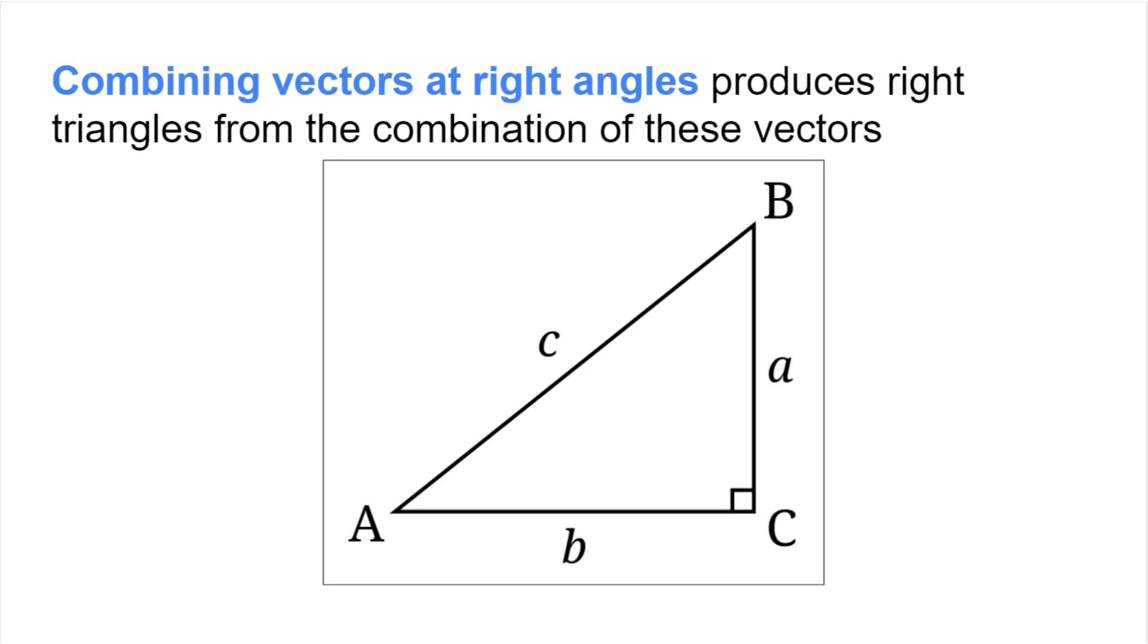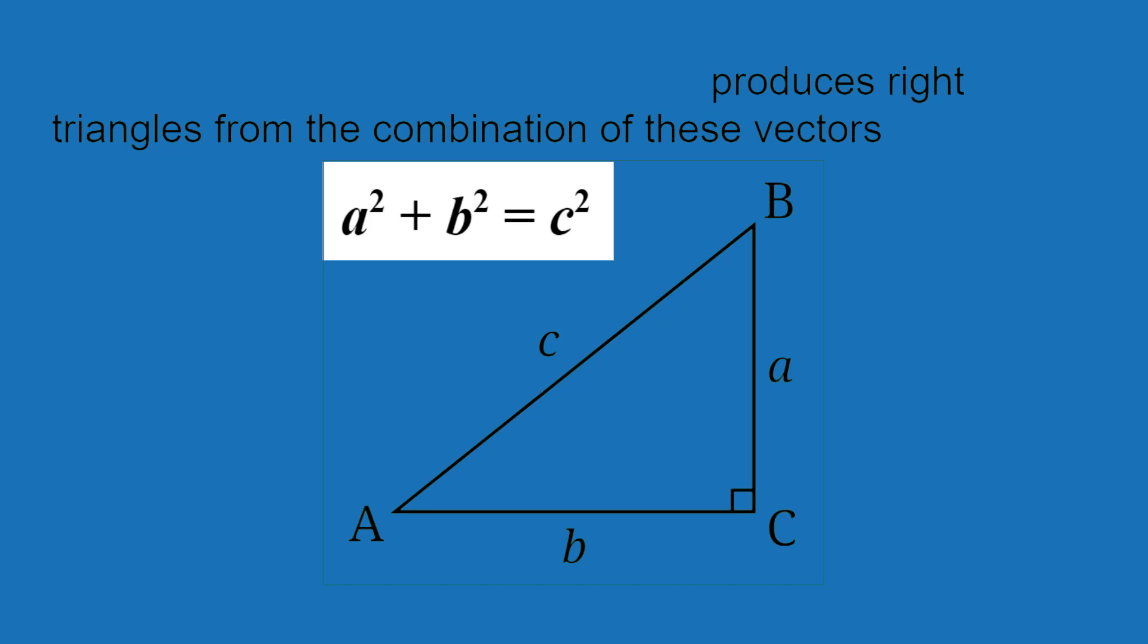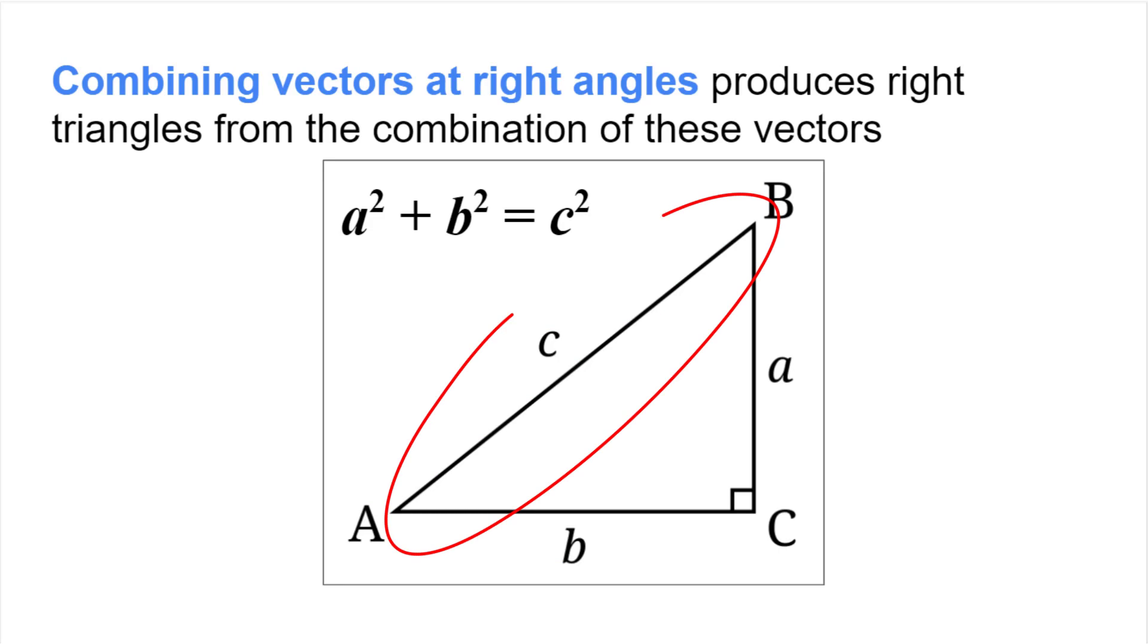The last significant part about vectors is being familiar with right triangles and the Pythagorean theorem. Because we can combine vectors to get resultant vectors, when vectors are combined at right angles we can produce right triangles. The importance of this feature is that with the Pythagorean theorem, which states that the square of the hypotenuse is equal to the sum of the squares of the two sides, we can solve for the length of the resultant vector. This can give physicists the ability to predict the outcomes of events given enough information.